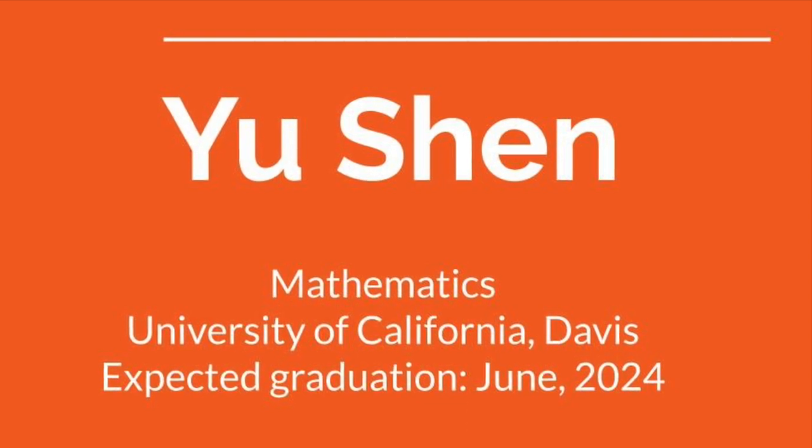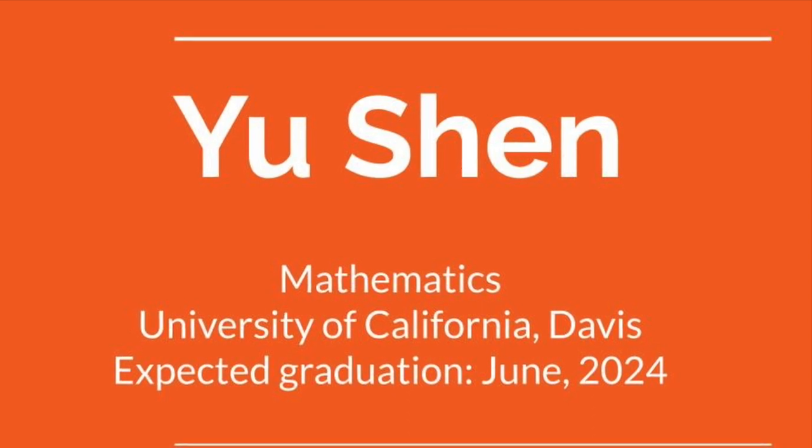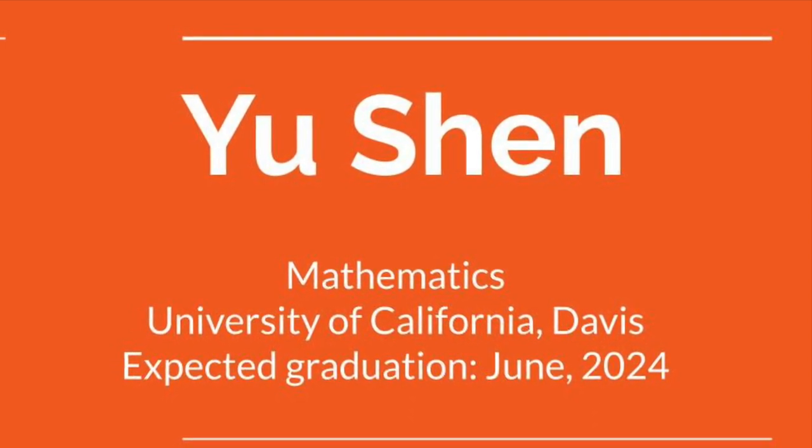Hello everyone, my name is Yu Shen, 20 years old. I'm a senior majoring in mathematics at University of California, Davis. My expected graduation date is June 2024.